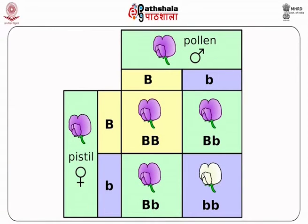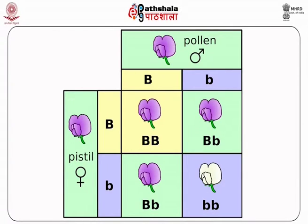For each biological trait, an organism inherits two alleles, one from each parent. These alleles may be the same or different. An organism that has two identical alleles for a gene is said to be homozygous for that gene and is also known as a homozygote.